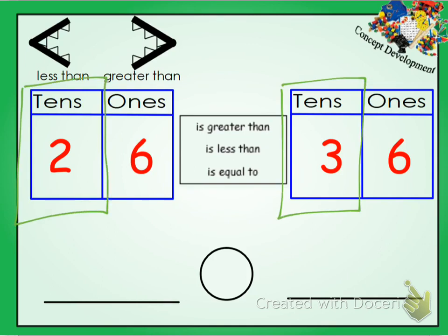So we know that 26 has two tens and 36 has three tens. Well, we know that 36, or three tens, is bigger or greater than 26. We know that 26 is less. So since the one that is less is in front, we know that 26 is less than 36.